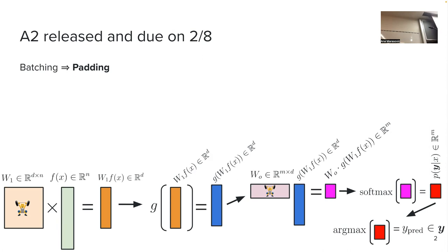Let's say the first example x1 is 'cat plays' and the second example x2 is 'we are eating.' These two sequences have different lengths — length two and length three. We want to put them into the same matrix of size batch_size × number_of_features, but the differing lengths create a problem.